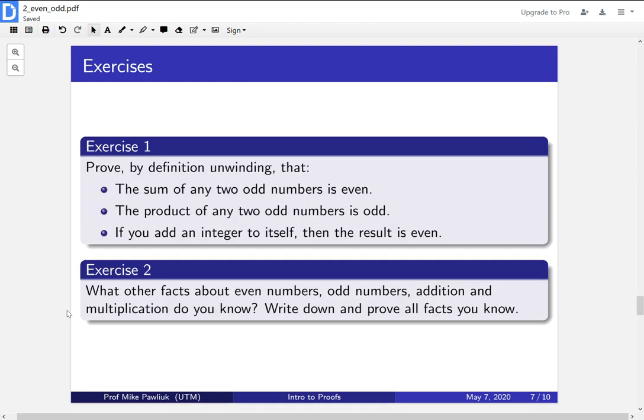Let's look at some exercises. One of your exercises is to prove, using this definition unwinding technique, that the sum of any two odd numbers is even, the product of any two odd numbers is odd, and that if you add an integer to itself the result is even. Your second exercise is: what other facts about even numbers, odd numbers, addition, and multiplication do you know? Write down all the facts you know and prove them using definition unwinding.